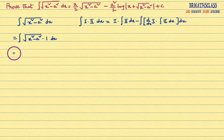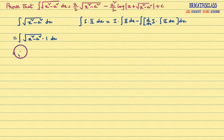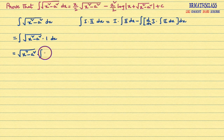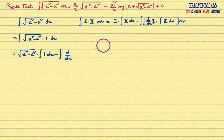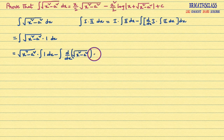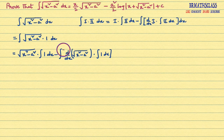So here, applying integration by parts: this is the first function and this is the second function. First function is root over x square minus a square, into integral of second function — the second function is 1, so integral of 1 dx — minus integral of derivative of first function into integral of 1 dx, whole dx.